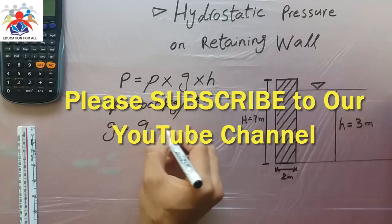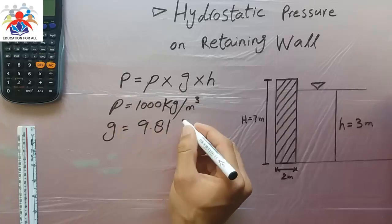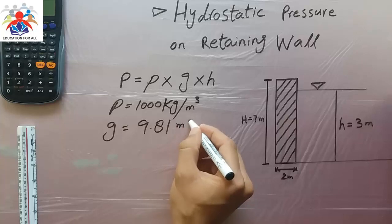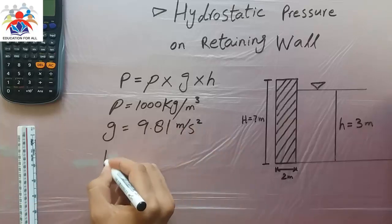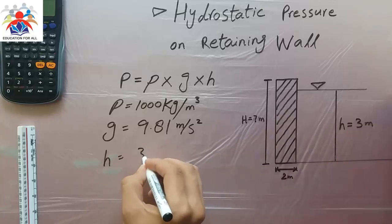The gravity we have 9.81 meter per second square. This is the height of liquid which in our case is 3 meters.